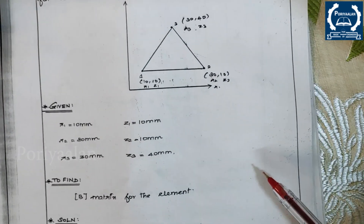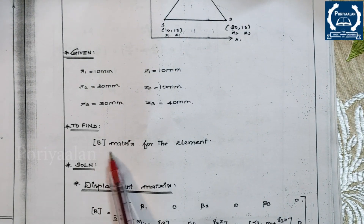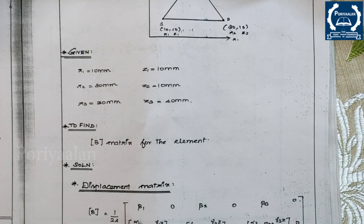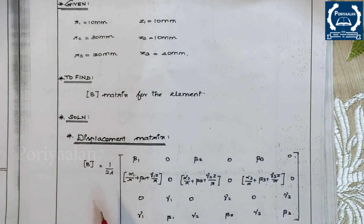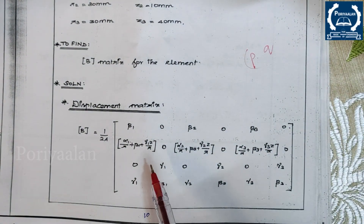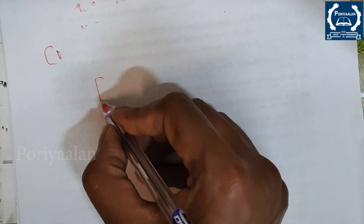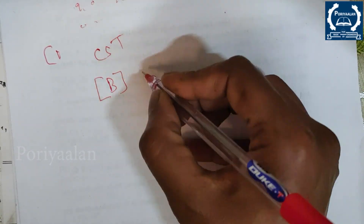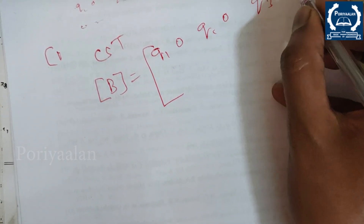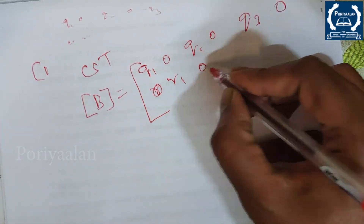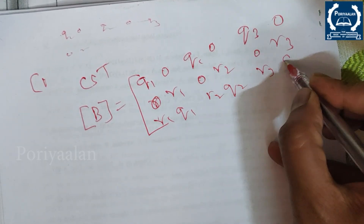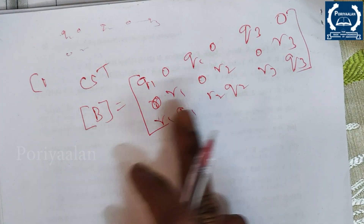Now write the given data and evaluate the B matrix. For the CST element, the B matrix formula is (1/2A) times a matrix with elements Q1, 0, Q2, 0, Q3, 0 in the first row; 0, R1, 0, R2, 0, R3 in the second row; and R1, Q1, R2, Q2, R3, Q3 in the third row.